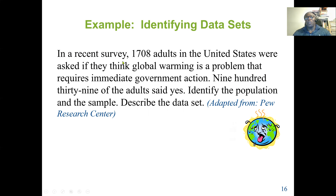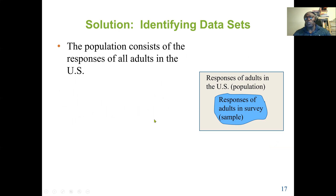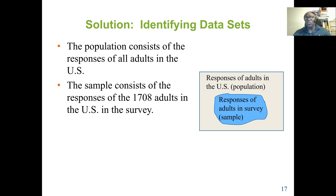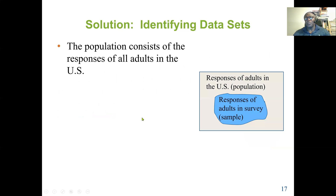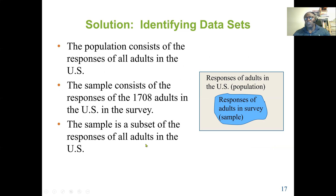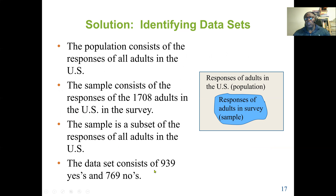As an example, a recent survey of 1,708 adults in the United States asked if they think global warming is a problem requiring immediate government action; 939 said yes. The population consists of all adults in the U.S., while the sample consists of the responses of those 1,708 adults. The data set consists of 939 yes responses and 769 no responses from the sample.